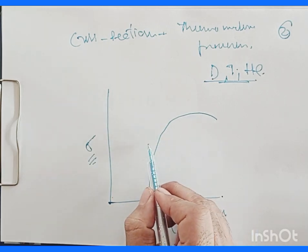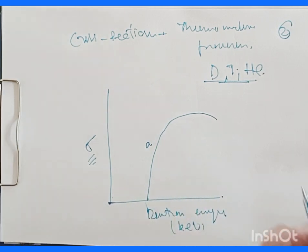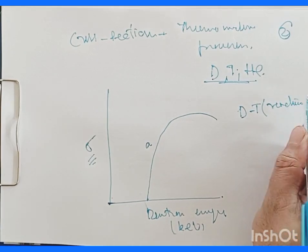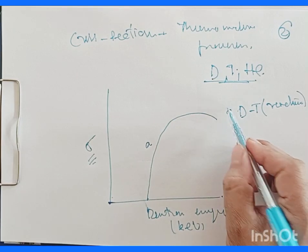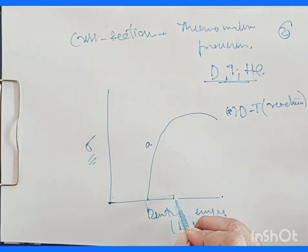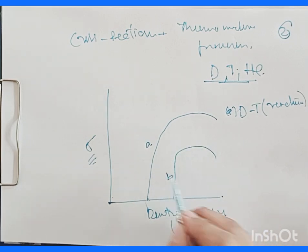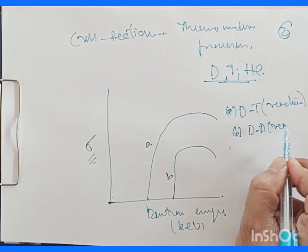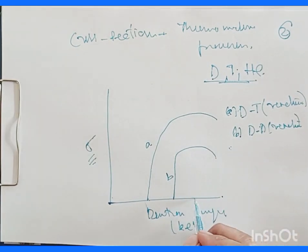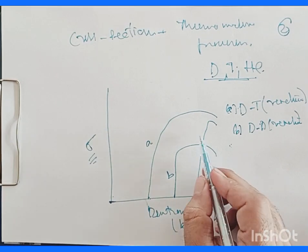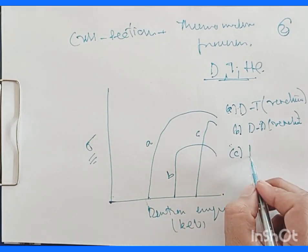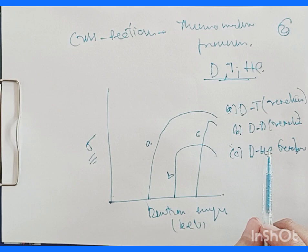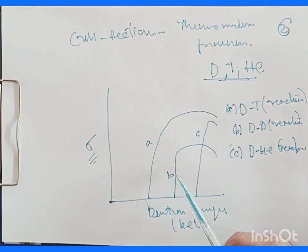Curve A gives the behavior of cross section for the deuteron-tritium reaction. Curve B shows the deuteron-deuteron reaction. Curve C represents the deuteron-helium reaction. This is the data plotted in terms of cross section versus the energy of the deuteron.